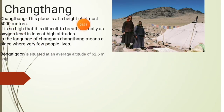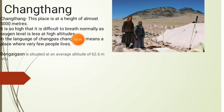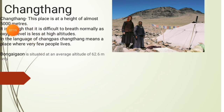Next is Changthang. As you can see from the picture, this place is at a height of almost 5000 meters. It is so high that it is difficult to breathe normally as the oxygen level is less at high altitude — as you go up, the level of oxygen keeps decreasing. In the language of Changpas, Changthang means a place where very few people live. Bongaigaon is situated at an average altitude of only 62.6 meters, so you can see the difference — Changthang at 5000 meters versus Bongaigaon at 62.6 meters.